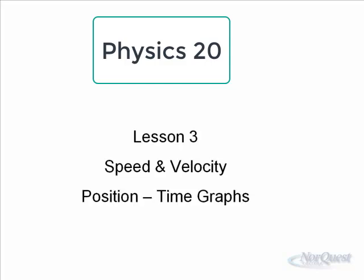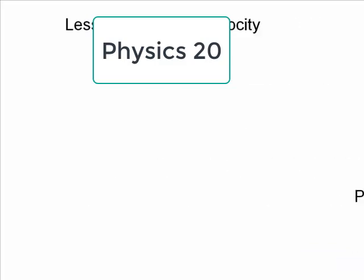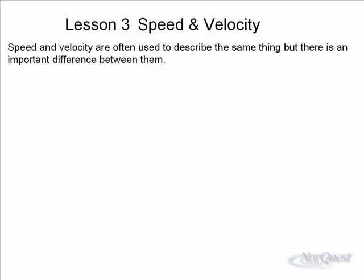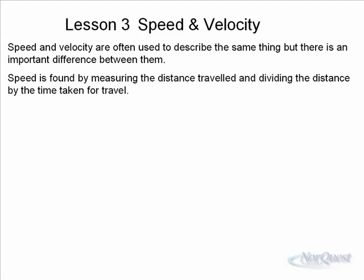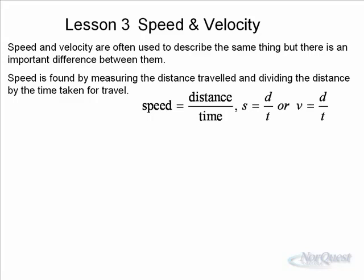In this lesson we'll look at Speed and Velocity and Position Time Graphs. Speed and Velocity are often used to describe the same thing, but there is an important difference between them. Speed is found by measuring the distance traveled and dividing that distance by the time taken for travel. So speed is distance over time — we often see the formula written as s = d/t.